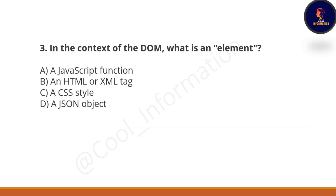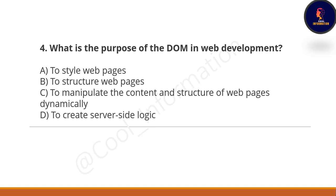Next question: In the context of DOM, what is an element? Option A: a JavaScript function. Option B: an HTML or XML tag. Option C: a CSS style. Option D: a JSON object. The correct option is B — an HTML or XML tag is an element in the context of the DOM.